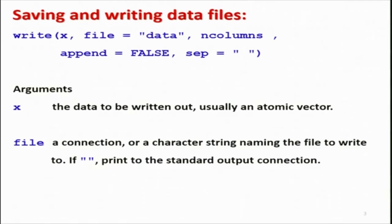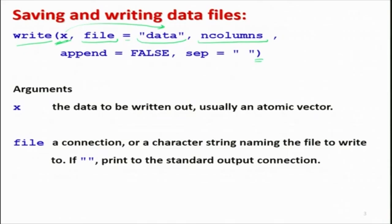Let's look at the write command. First, you write 'write' in lowercase, then specify which output you want to save — this can be a variable or data object. Then you write 'file=' followed by the filename in double quotes, specifying which file you want to save to. After that, you specify how many columns you want to arrange using the ncolumns parameter. Then there is an optional parameter: append equals true or false.